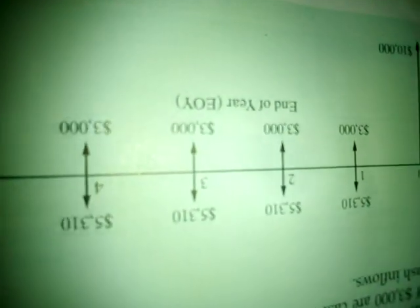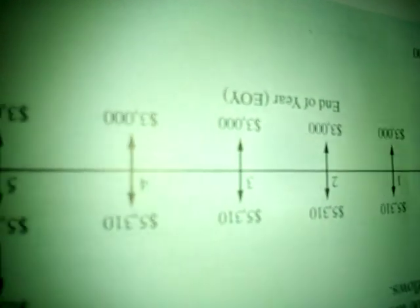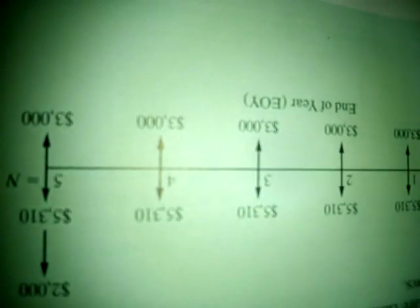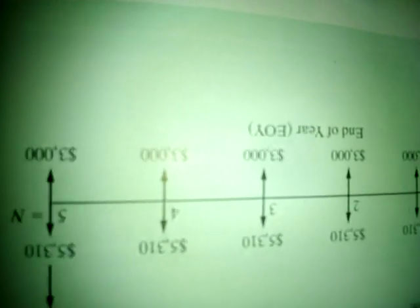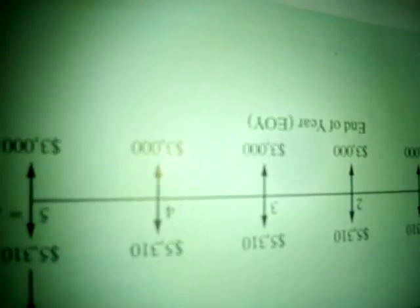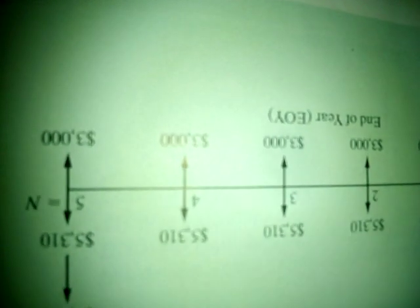Every company also has expenses. The annual expense is three thousand dollars every year, plotted below the zero line — three thousand, three thousand, three thousand for four years. This represents money going out — money you are spending.